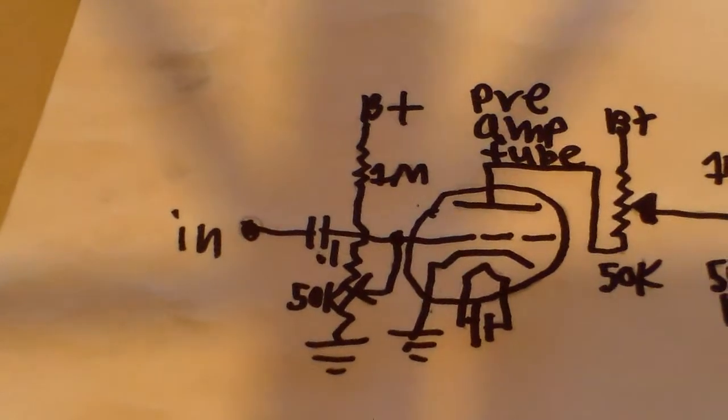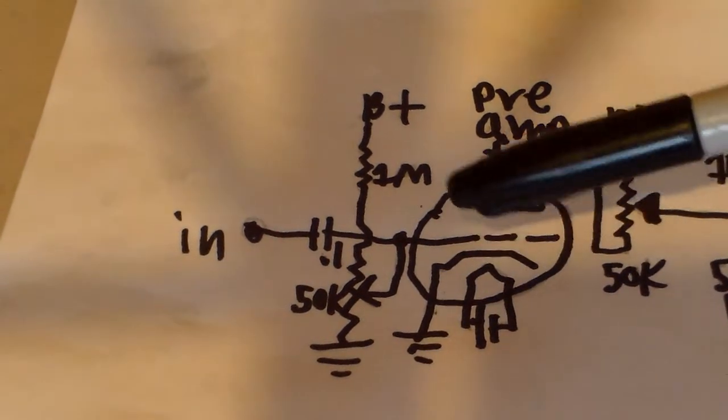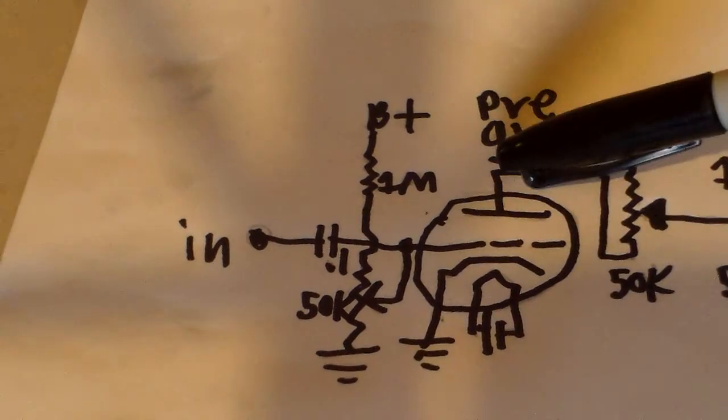Right here we have a triode vacuum tube which consists of a filament, a cathode, a grid, and a plate.